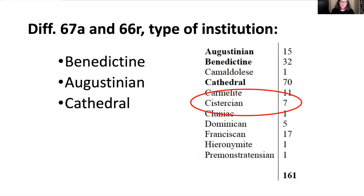This is interesting because, as I said, we know the Dendermonde manuscript was sent to the monks at Villers, a Cistercian abbey. The placement of the differentiae in Dendermonde is rather odd, which has made some people think that maybe they were added at Villers and not at Rupertsberg. If that were the case, we would expect the differentiae to correspond with other Cistercian manuscripts, not with the Benedictine, Augustinian, and cathedral manuscripts.